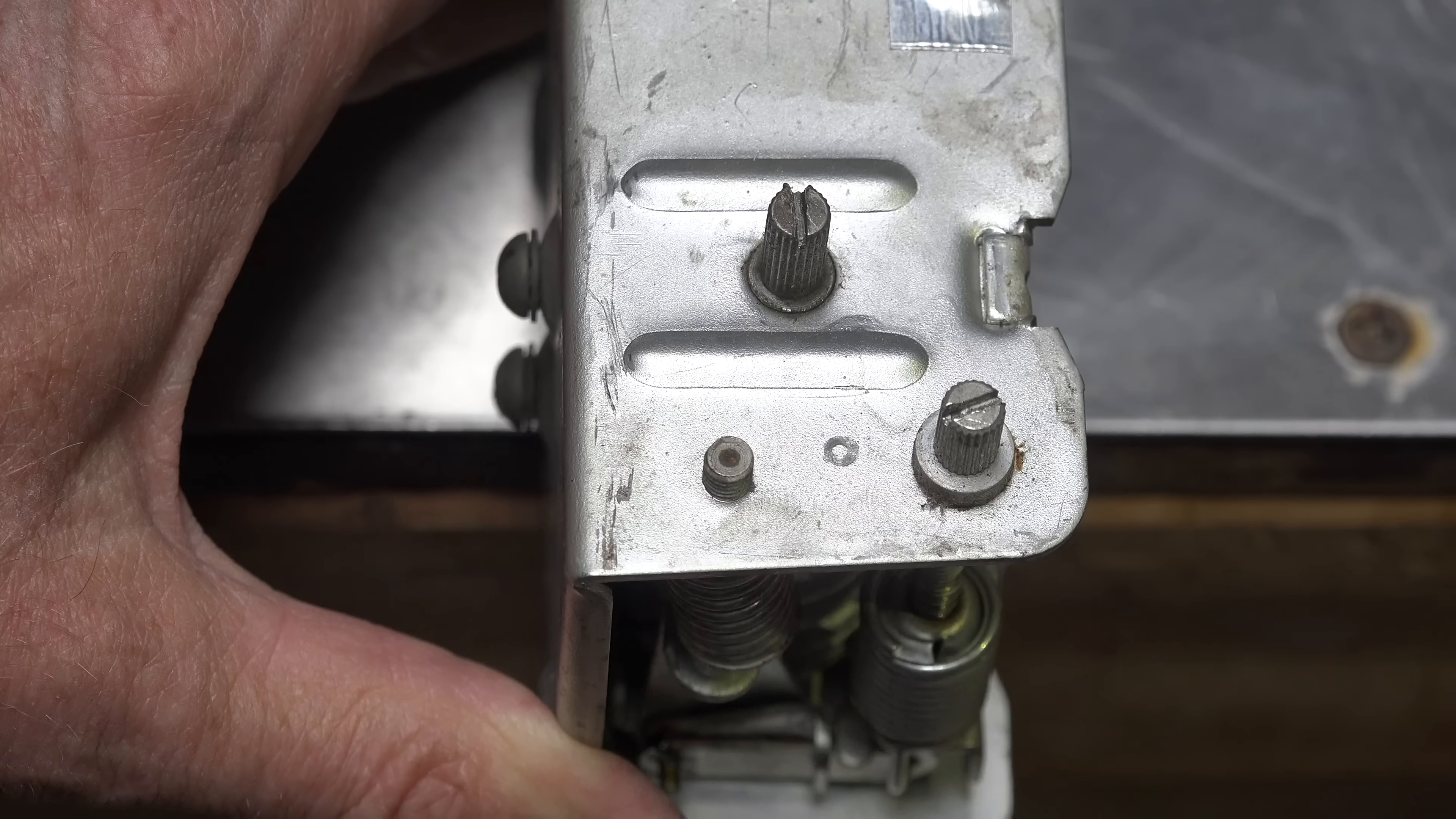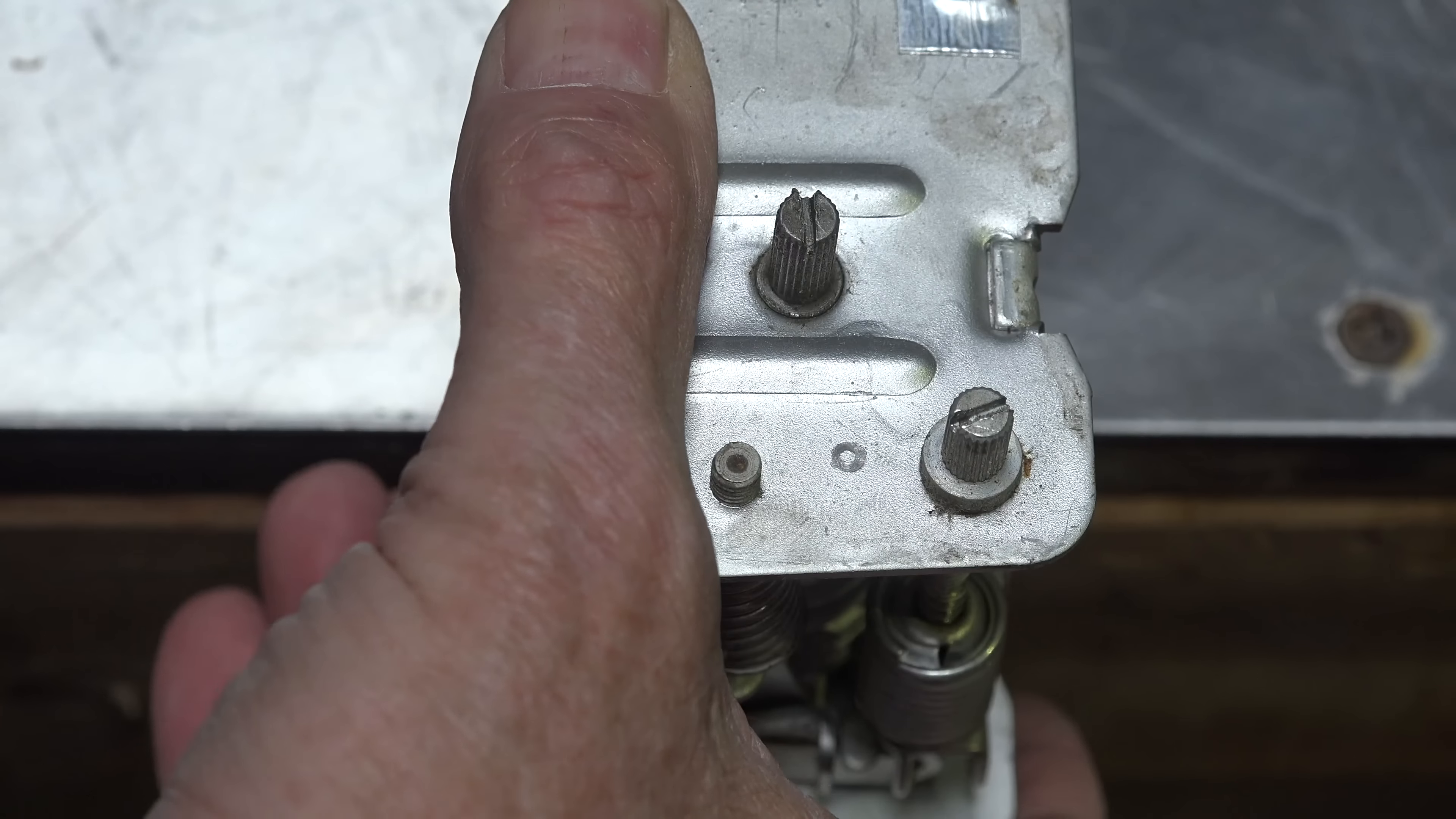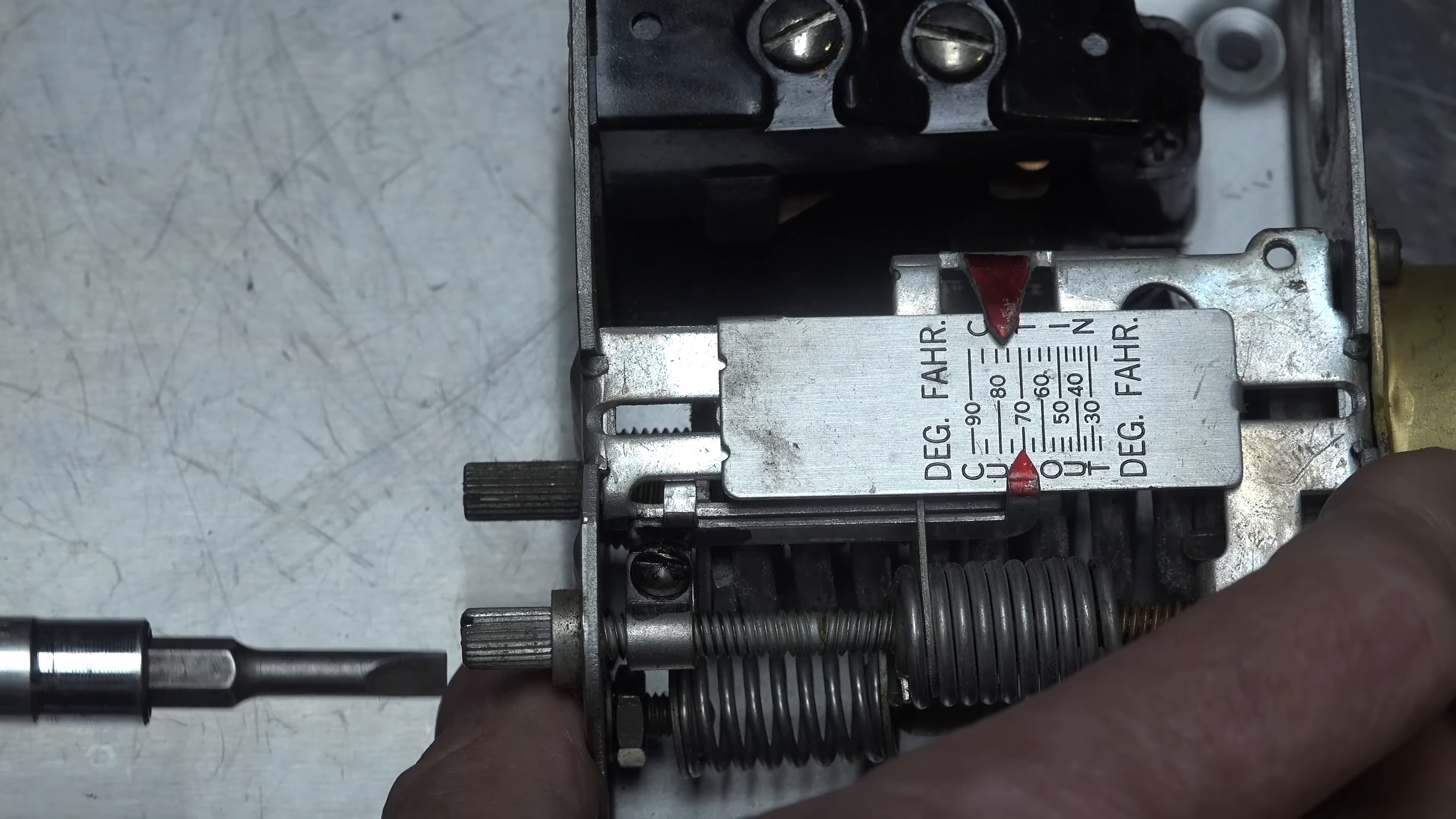That's how that actuates. Now looking at the top of this, these are the two adjustments for the temperature and the differential. With the screwdriver I'm just gonna move these back and forth and you'll see what changes they make. So note, if I turn this one, it moves the whole scale up and down. If I move this one, it moves the cutout.